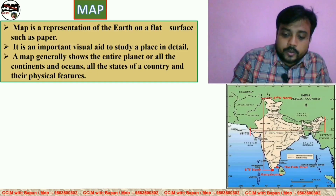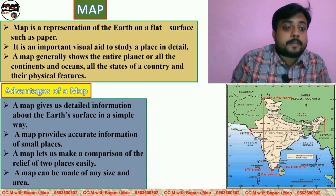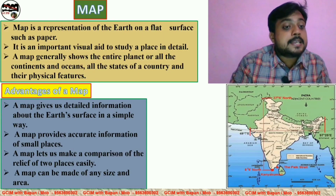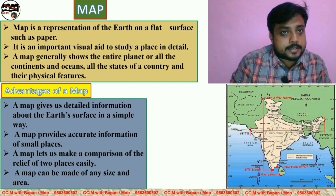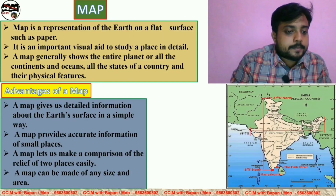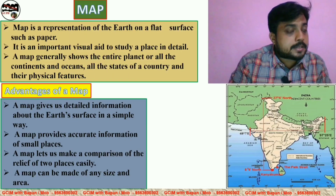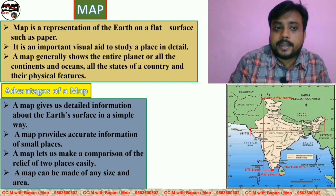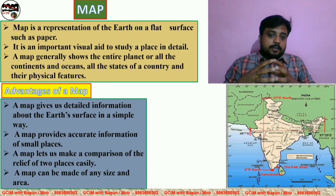Now I will show you some advantages and disadvantages of the map. These are a few advantages of the map. First: a map gives detailed information about the earth's surface in a simple way. Number two: a map provides accurate information about small places. Number three: a map lets us make a comparison of the relief of two places easily.